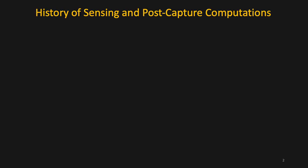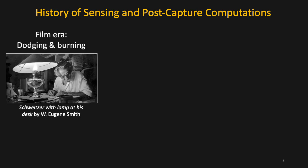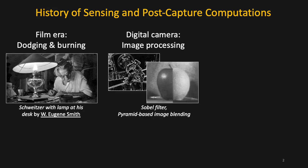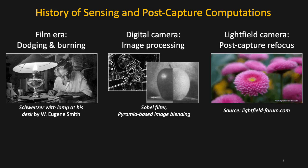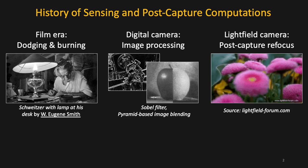Throughout the history of imaging, sensing technologies and post-capture processing have developed in lockstep. In the film era, dodging and burning were examples of post-capture processing. Later, digital cameras led to image processing at the granularity of pixels. More recently, light field cameras provided processing at the level of light rays, which led to novel capabilities such as refocusing photos after capture.